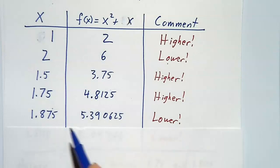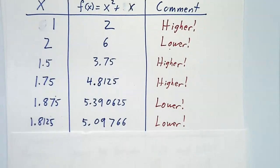You guess 1 and 7 eighths. Whoops, you need to go lower. So now you pick a point halfway between 1.75 and 1.875. And now you need to go lower.